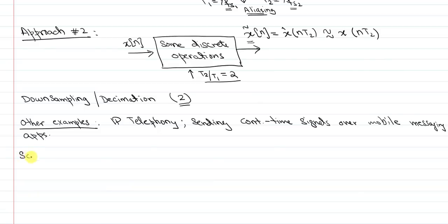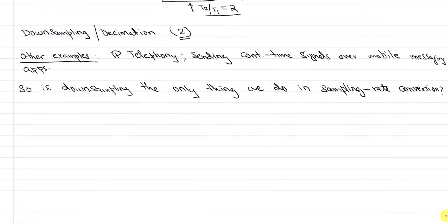Now, the question is, is downsampling the only thing we do in sampling rate conversion? And the answer is no. Sometimes what happens is that instead of you reducing the rate, you want to increase the rate.